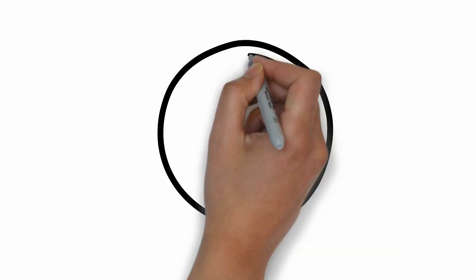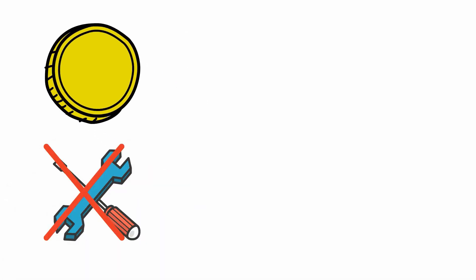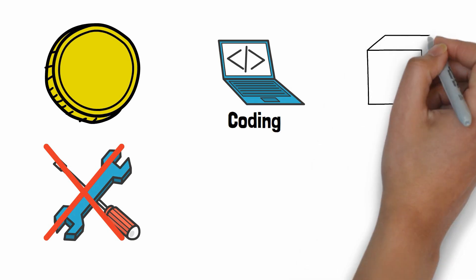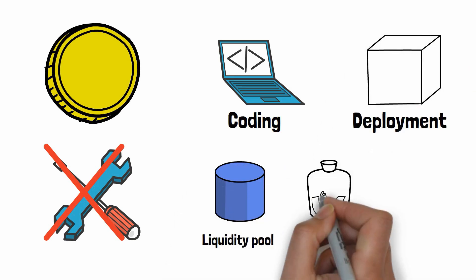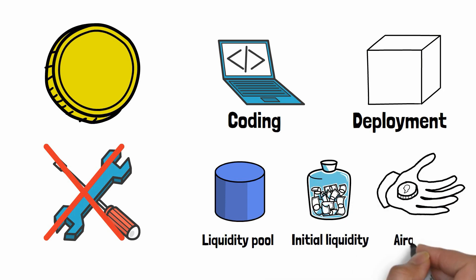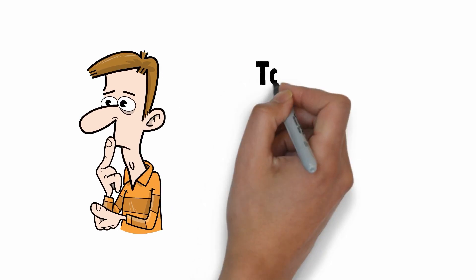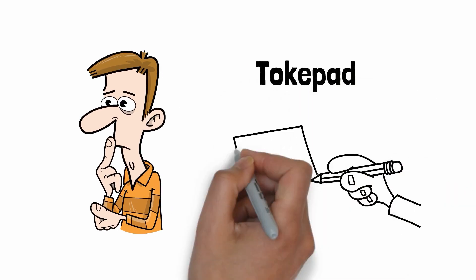So now you know the basics, but how can you create your own token? A first solution would be to create a token from scratch without using any tool. But if you do this, it's quite complex. First, you need to create the code of the token, which requires some coding skills. Then you need to deploy the token to the blockchain, create a liquidity pool, supply the initial liquidity, and do an airdrop. Are you lost? Don't worry, because if you use Tokpad, it's going to cover all these steps. You just have to click on a few buttons.